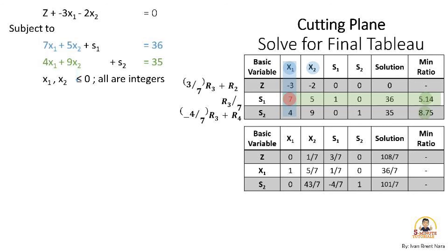For example, let's solve the coefficient of x₂ or column 3 under the second constraint x₂ or row 4 which is 9. So -4/7 multiplied by row 3 that's 5 plus row 4 that's 9 which equals 43/7 and so on.